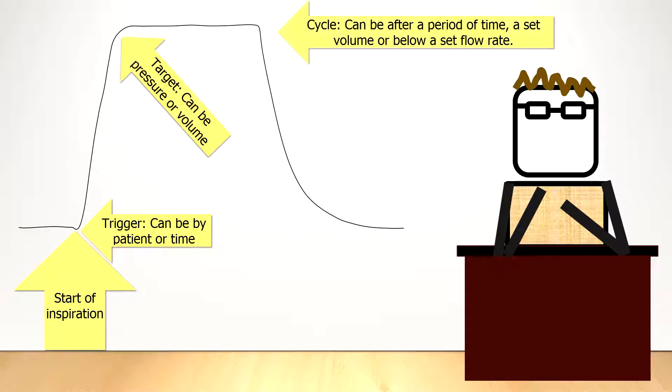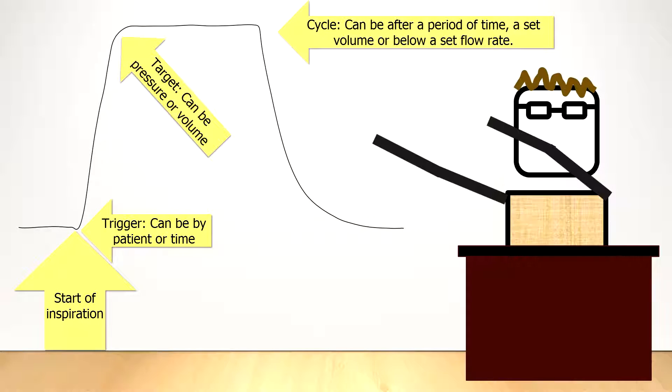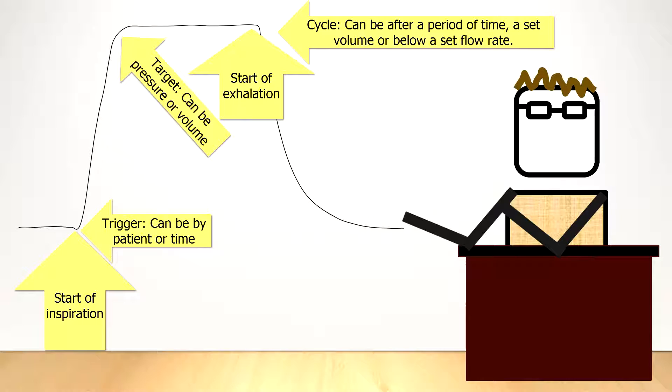The final phase of the ventilator cycle is cycling. Cycling marks the end of inspiration and the start of exhalation. It can occur after a set period of time, such as the inspiratory time, or after a set volume has been delivered, or after a point where the set flow rate drops below a certain level.